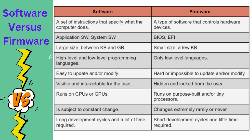Software is subject to constant change, whereas firmware is embedded during the manufacturing process and changes are extremely rare. Software has a long development cycle requiring a lot of effort and time, with many cycles from requirements to deployment. Firmware, by contrast, has a short development cycle and needs little time, as it is developed mostly by embedded system engineers — also called firmware engineers.